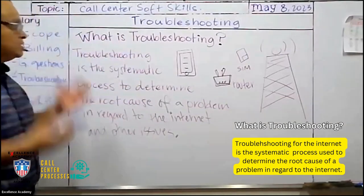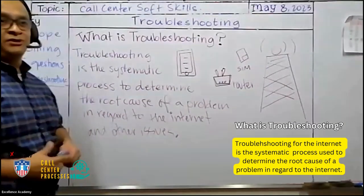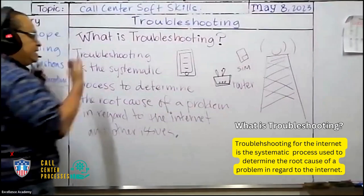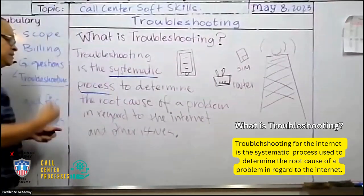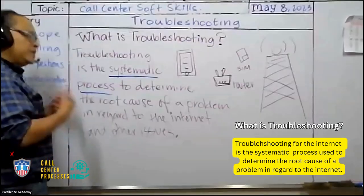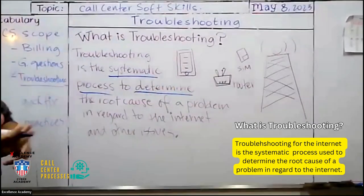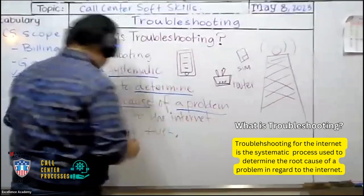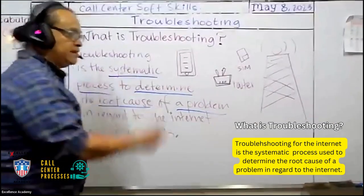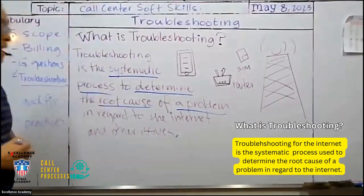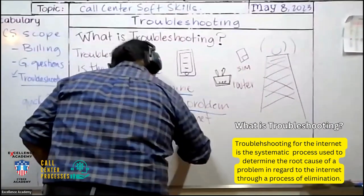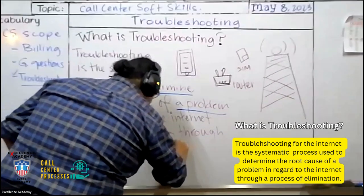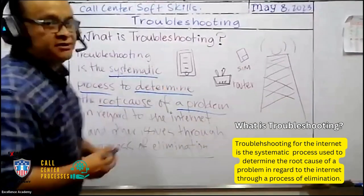First of all, troubleshooting is a call center process that is very common. It's an activity that we do a lot in, especially in customer service or tech support. It is a systematic process, a series of steps that we use to determine, to figure out, to understand the root cause, the main cause of a problem in regard to the internet, connectivity issues or issues with the device. And we're going to do this through a process of elimination. This is important. This is key to understanding what is troubleshooting - the process of elimination.